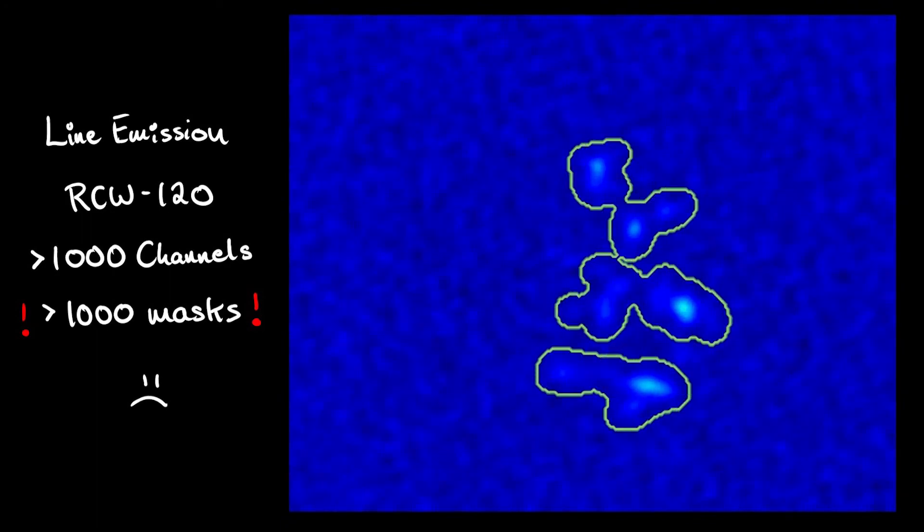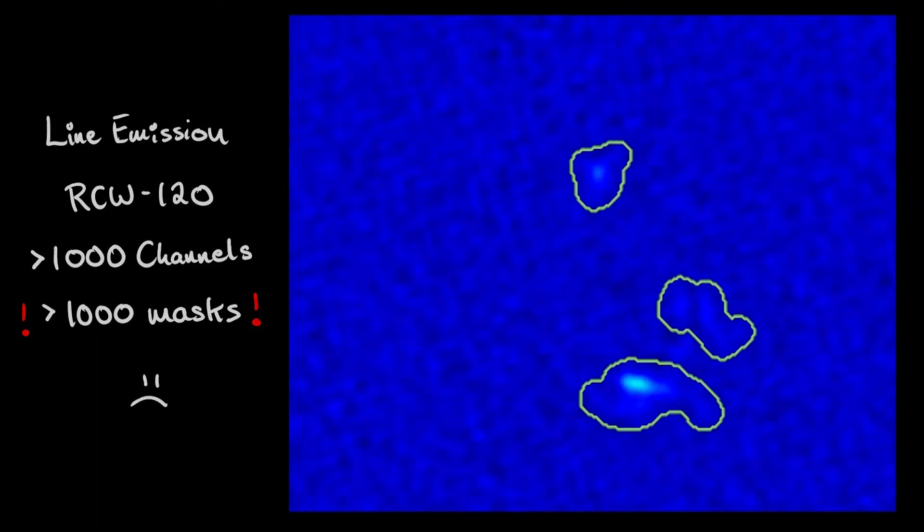Starting in Alma Cycle 5, the Alma Imaging Pipeline uses the auto-multithresh algorithm in CASA to automatically mask emission while cleaning.